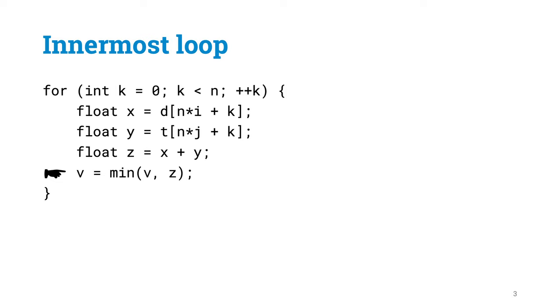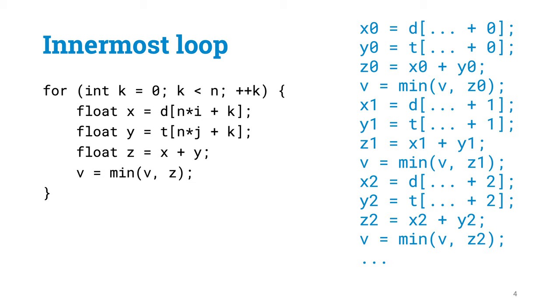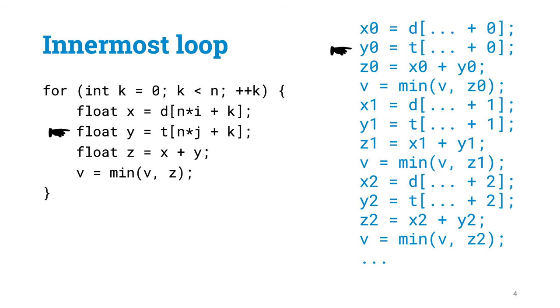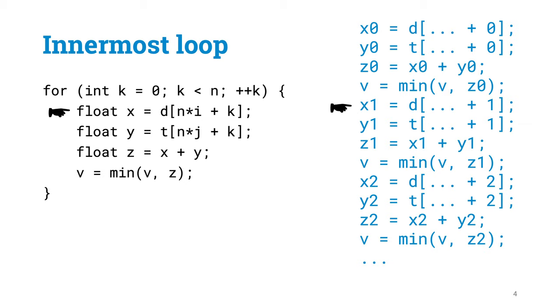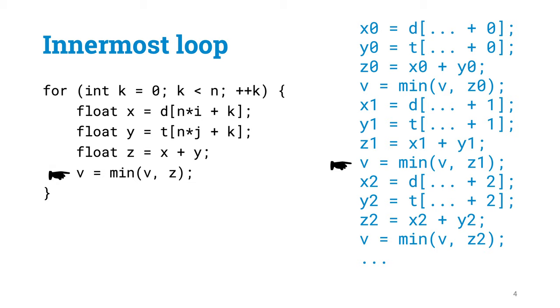Why is this the case? Let's imagine that we unroll the innermost loop and look at the sequence of instructions the CPU is going to perform. What happens in the innermost loop? We read X, we read Y, we do one addition, and we calculate one minimum. Then we read again, read again, do another addition, and calculate minimum, and so on.